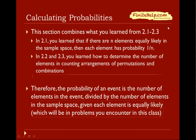This section combines what you learned from all the previous sections from this chapter. In 2.1, you learned that if there are n elements equally likely in the sample space, then each element has probability 1 over n. In 2.2 and 2.3, you learned how to determine the number of elements in permutations and combinations. Therefore, the probability of an event is the number of elements in the event divided by the number of elements in the sample space, given each element is equally likely, which are the problems you're going to do in this class.